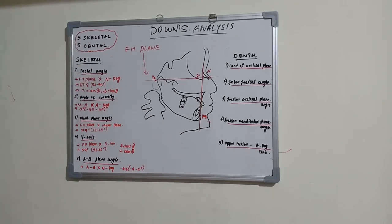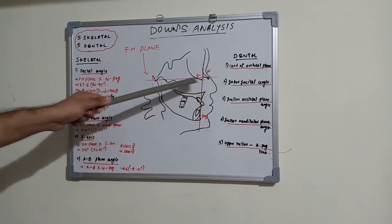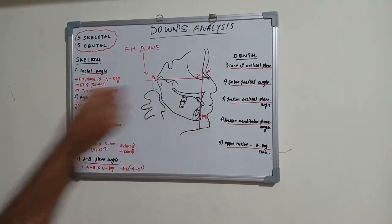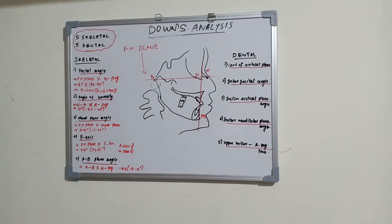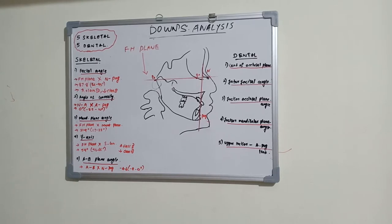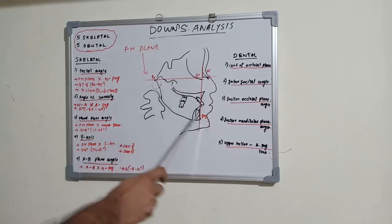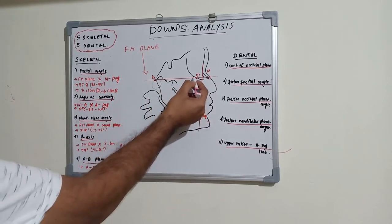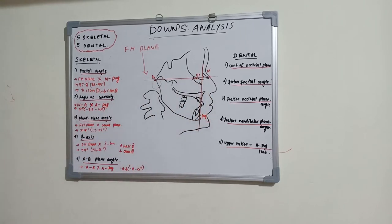The first skeletal parameter is the facial angle. It is the inferior inside angle formed by the intersection of the FH plane and the nasion-pogonion plane. Nasion is the nasion point, and pogonion is the most anterior point on the symphysis of the mandible. The angle formed between these two planes is the facial angle, with a mean value of 87.8 degrees.